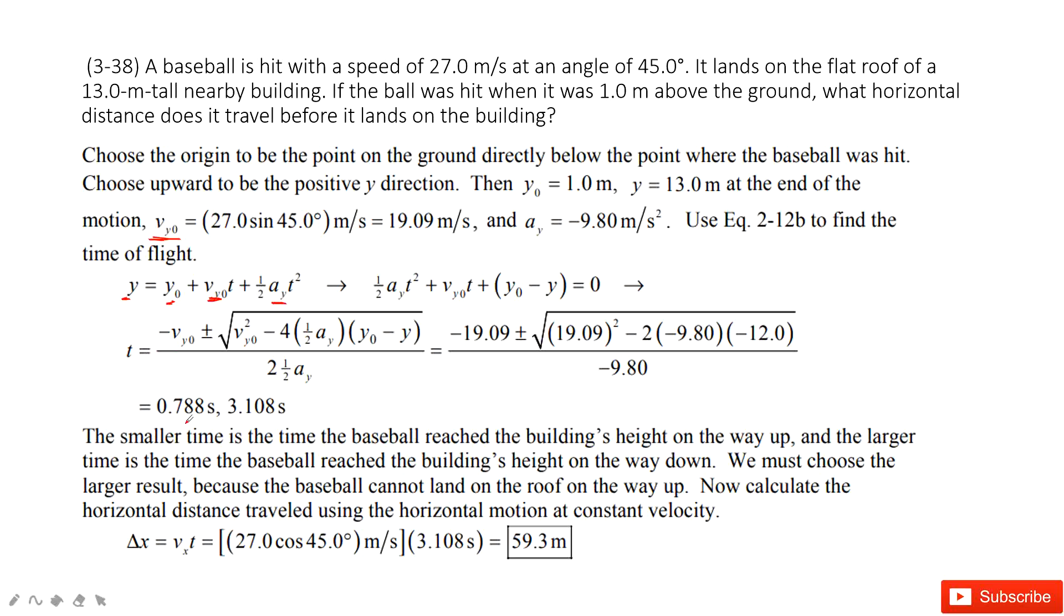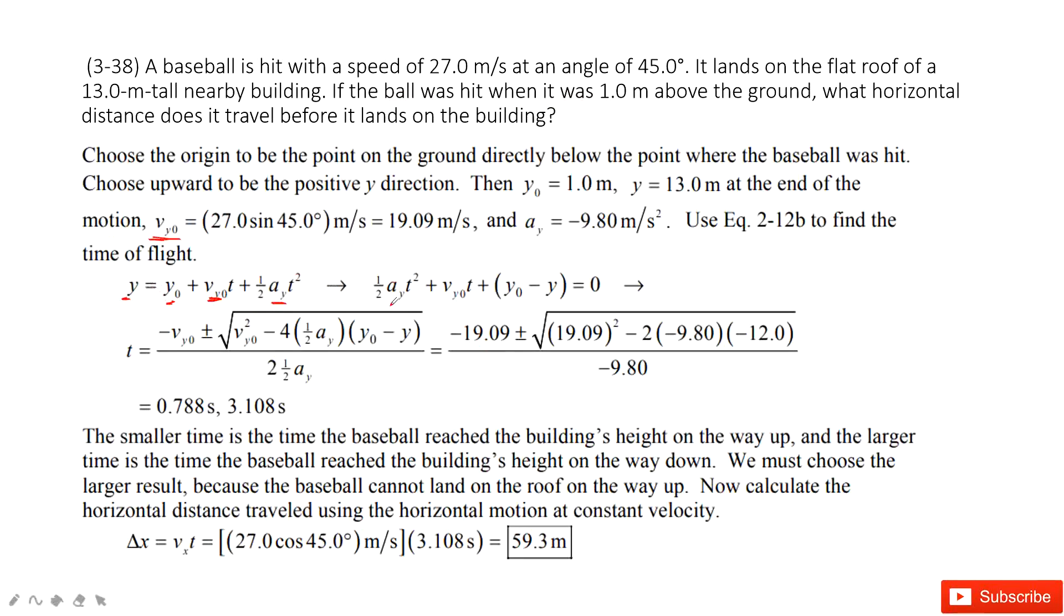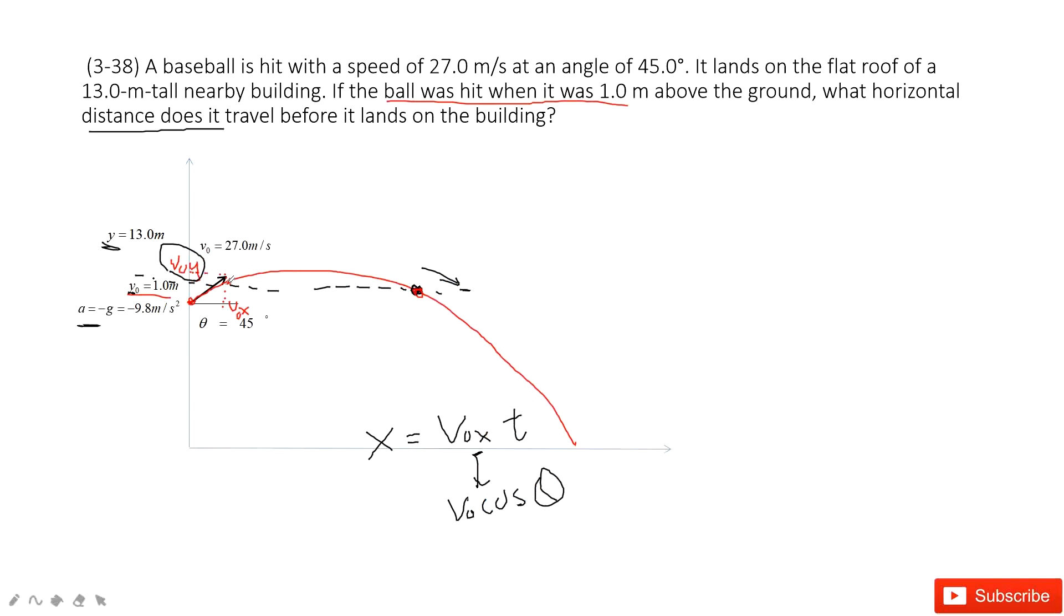You can see, there will have two choices of the time t. And which one to choose? This is very easy to understand. Because look at this picture. And the first time, it goes up. And then it goes down. So we choose the second time. Because this is t1, this is t2. So this one is 0.788. This is smaller time. This is like t2 is this one. Because when it lands on the top of the building, it must move down. Move down, right?